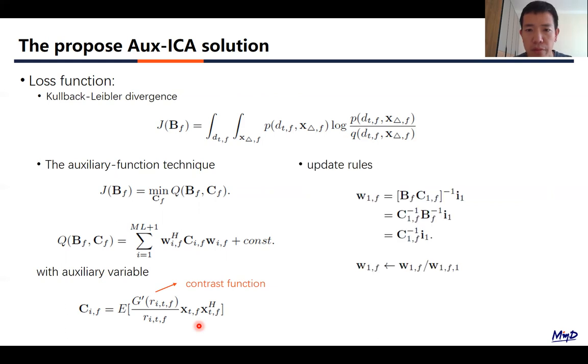We have the following update rules to solve this demixing matrix. If we assume matrix B is invertible, which is indeed the case, we can simplify this formulation. And we normalize this first row vector with respect to its first element.